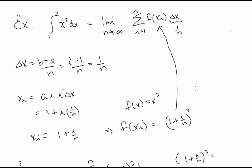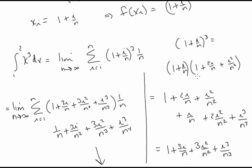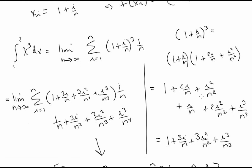Let's look at another example: the integral from 1 to 2 of x to the third. Computing this as a limit, delta x equals b minus a over n, so that's 2 minus 1 over n, which is 1 over n. Then x i equals a plus i delta x equals 1 plus i over n. Plugging into f gives (1 plus i over n) to the third, which we expand to 1 plus 3i over n plus 3i squared over n squared plus i cubed over n cubed.